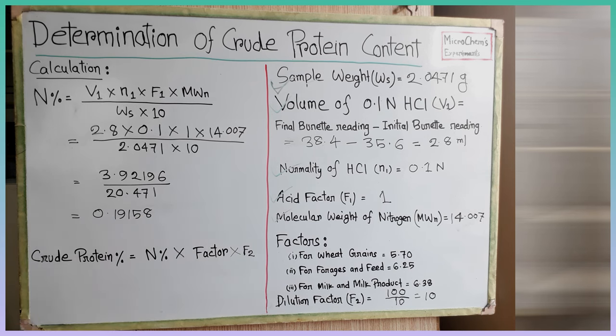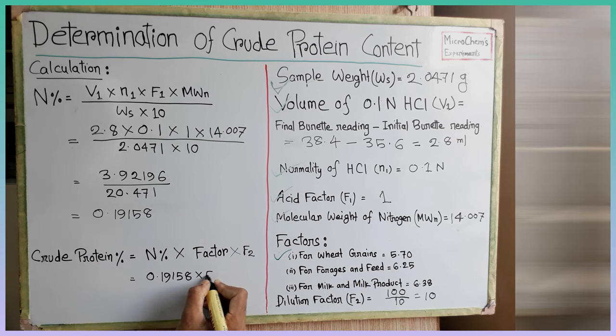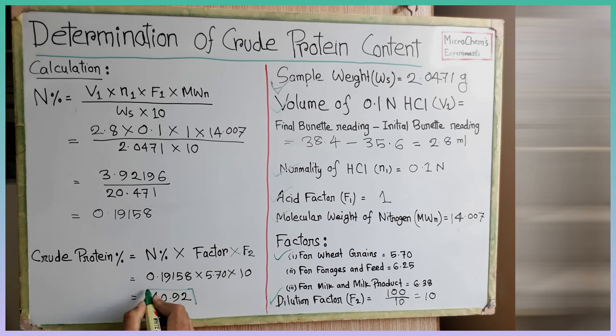Now we will use this value in the second equation. So here is nitrogen percent value 0.19158. We tested wheat sample. That's why we will put the value of factor 5.70 as given by this method. Dilution factor is 10. By solving equation 2 we can find the crude protein of the sample is 10.92 percent. This is the value we wanted to find throughout the test.